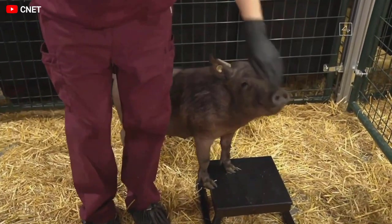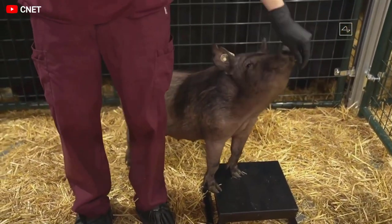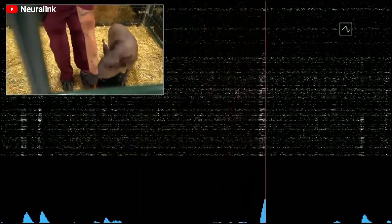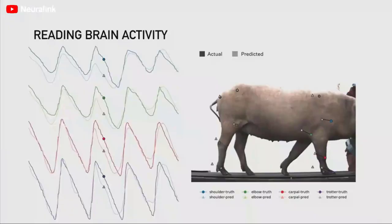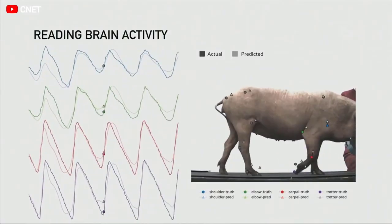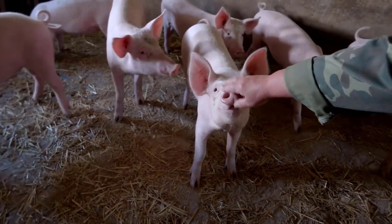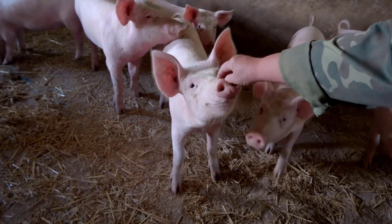As for demonstrations specifically of Neuralink, the company has already shown last year their real-time reading of a pig's brain signals, as well as predicting the position of its legs on a treadmill. One of the guinea pigs was implanted, and then after some time the chip was removed, and the animal felt absolutely calm with no signs of harm to the body were found.